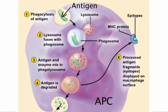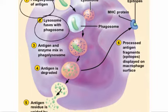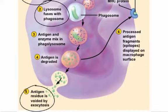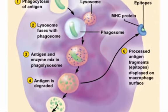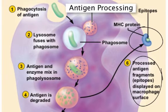When an antigen-presenting cell encounters an antigen, it ingests it via endocytosis, uses lysosomes to break it down into fragments, disposes of the residue it doesn't use, and then displays its epitopes in the grooves of the MHC protein. This is called antigen processing.